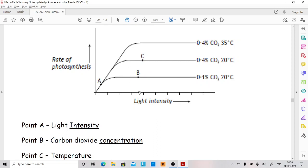If you want to know what the limiting factor at B is, we need to compare it to C and do a spot the difference. So this one's got 0.1% carbon dioxide, that one's got 0.4% carbon dioxide. So that's less than that. So carbon dioxide must be the limiting factor at B.